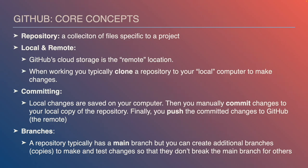You create a branch specific to a particular task — say you've identified a bug in the software you want to solve. You create a branch to fix that bug, work on it, and when it's fixed, merge that branch back into the main branch. In the meantime, different people can work on different features or fixes without interfering with each other's work.